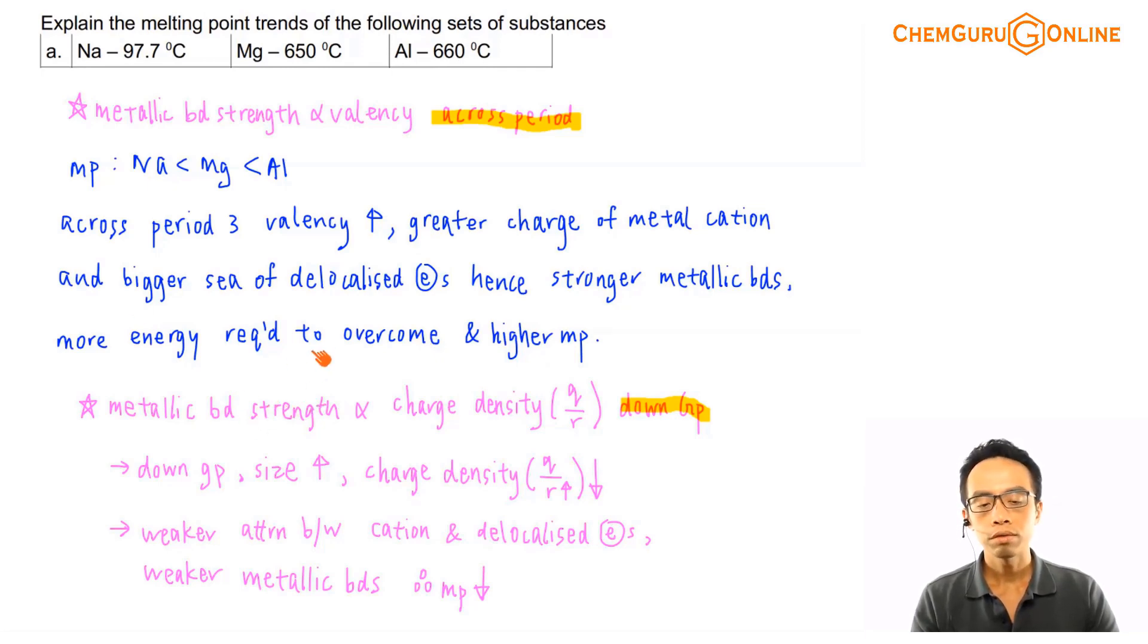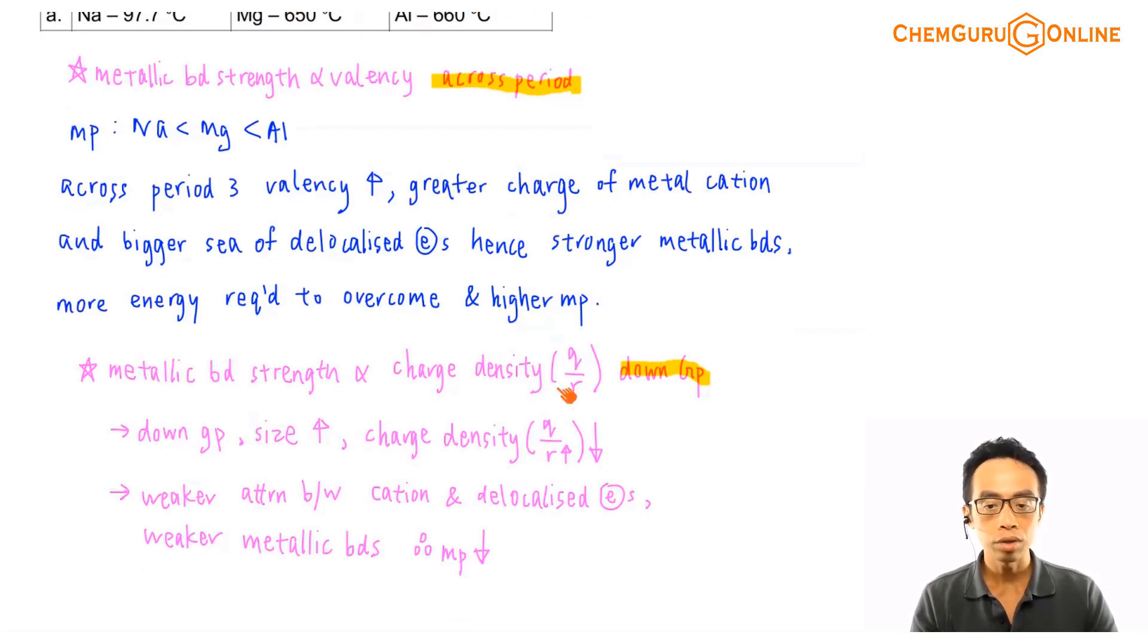Now, metallic bond strength is also related to this idea, charge density. Charge density actually is a very important property, a very important value for metal cations. And we actually make use of this charge density of metal cations to do explanations involving many properties, or many outcomes involving metal cations. Along the way we will talk about it, but charge density, basically it is just the charge of your metal divided by the radius of the metal.